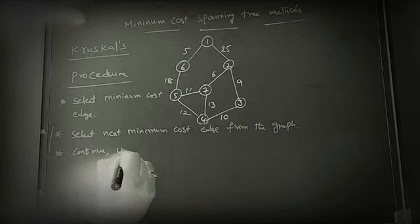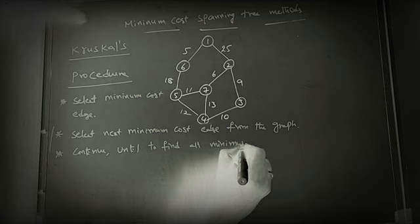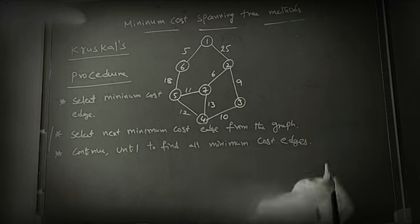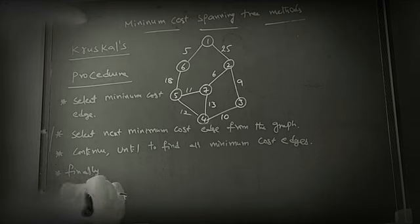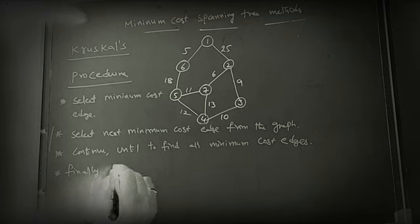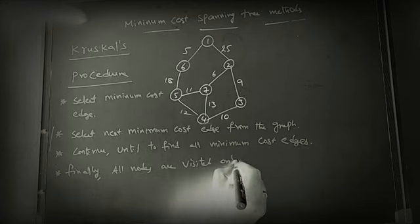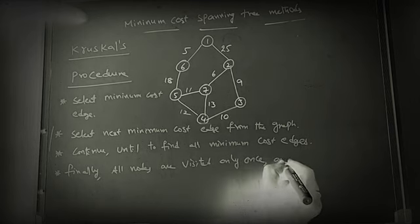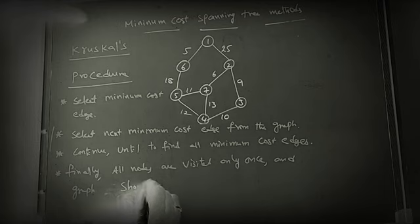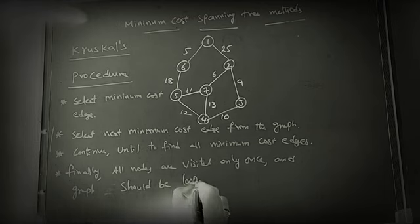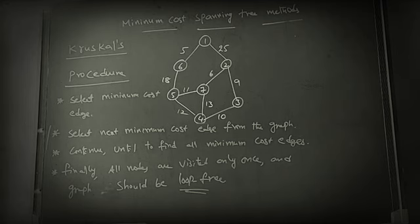Continue until you find all minimum cost edges. Finally, what is the final step? All nodes are visited only once or exactly once, and the graph should be loop-free. That means no cycles in the graph. So this is the procedure involved in Kruskal's algorithm to find the minimum cost spanning tree.